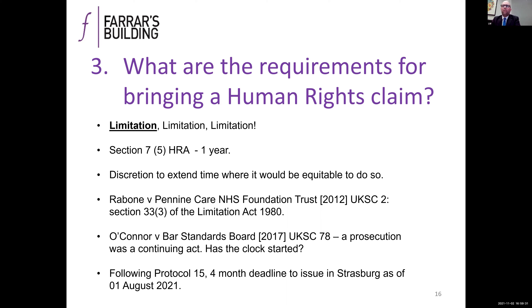First of all, limitation — really important whether you're acting for a claimant or a defendant. Section 7(5) of the Human Rights Act limits limitation in a non-judicial review claim to one year. If it were a judicial review, obviously it would be three months. One year is not a huge amount of time to get all your evidence together from the alleged breach to getting your claim form served, so that is a relatively tight limitation period. Equally, if you're defending a claim, it's the first thing to look at because practitioners may miss this. With personal injury limitation being three years, if you want to tag on a human rights claim, the chances are you may be out of time by the time you've issued.